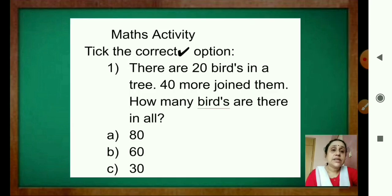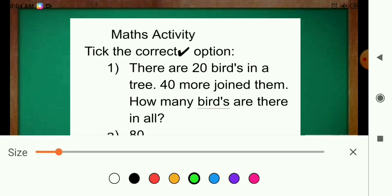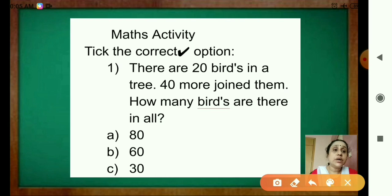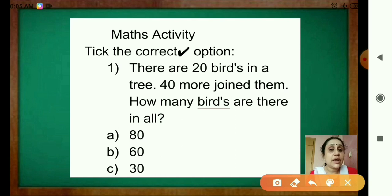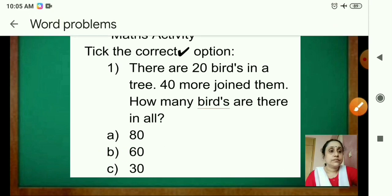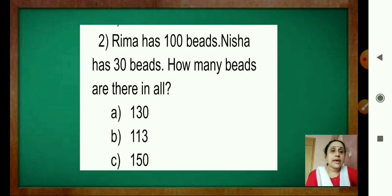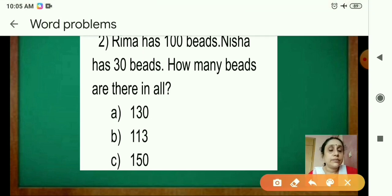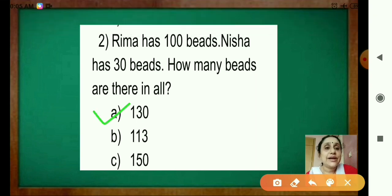Now come to the maths activity — check the correct option. Read the questions carefully. There are 20 birds in a tree and 40 more joined them. How many birds are there in all? 20 plus 40 is 60. Next: Rima has 100 beads, Nisha has 30 beads. How many beads are there in all? 100 plus 30 is 130.